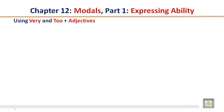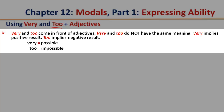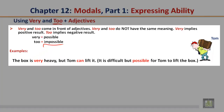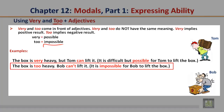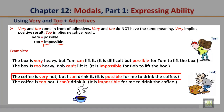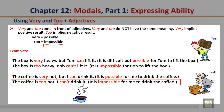Using very and too with adjectives. Very and too come in front of adjectives but do not have the same meaning. Very implies a positive result — very equals possible. Too implies a negative result — too equals impossible. The box is very heavy, but Tom can lift it — difficult but possible. The box is too heavy; Bob can't lift it — it is impossible for Bob to lift the box. The coffee is very hot, but I can drink it — possible. The coffee is too hot; I can't drink it — impossible.